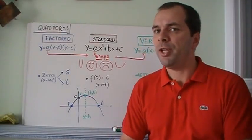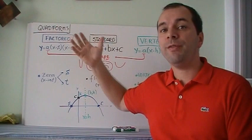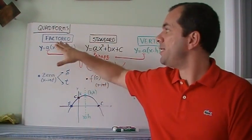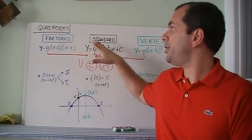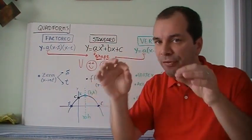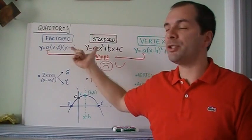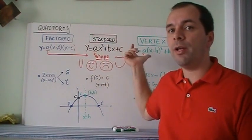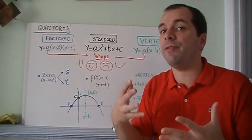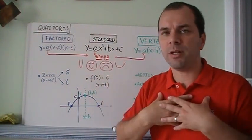There's going to be a lot of information in this video. We're talking about quadratic forms — the different forms for a quadratic function. We have basically three: standard, factored, and vertex. These are three names for the same shape. Just because we call it factored, standard, or vertex, the shape doesn't change — the parabola doesn't change. It's just a different name, and we get different information from it.